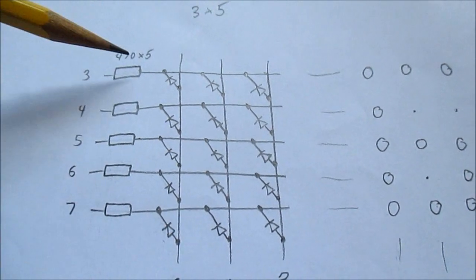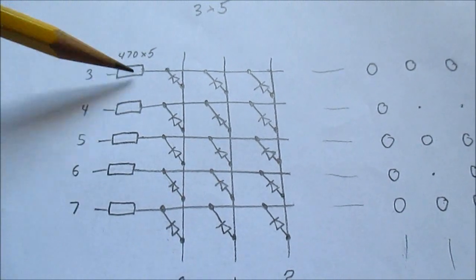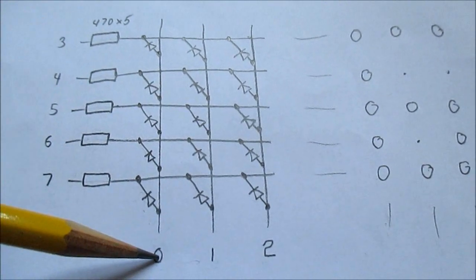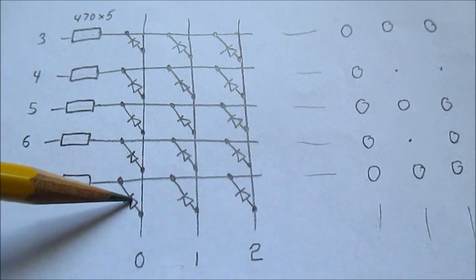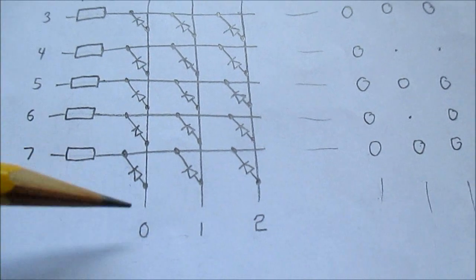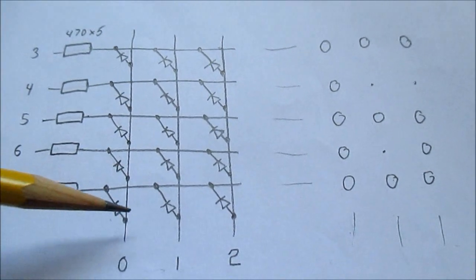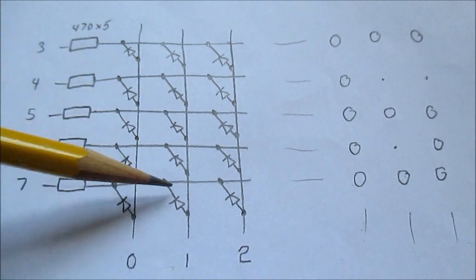So what I did is I have five rows with the resistor on it and the column. And you see the direction that the LEDs are connected with that display. So what I do is I display one line at a time.